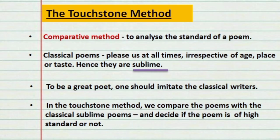The next point is the touchstone method — a comparative method proposed by Arnold to analyze the standard of a poem. Classical poems can please us at all times irrespective of age, place, or taste; hence we call them sublime. To be a great poet, one should imitate the classical writers — not meaning poems should exactly resemble the classics, but that the high standards of the classics must be maintained. In the touchstone method, we compare poems with classical sublime poems to decide if a poem is of high standard.